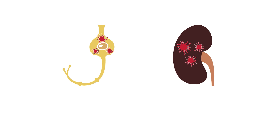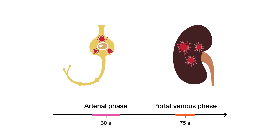For this reason, both neuroendocrine tumors and renal cell carcinoma benefit from a dual phase examination, which includes both arterial and portal venous phase imaging.